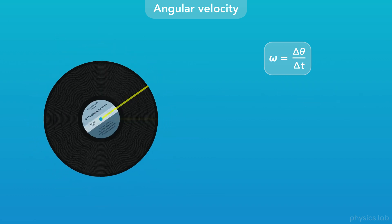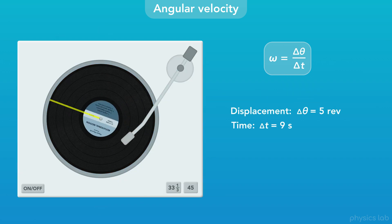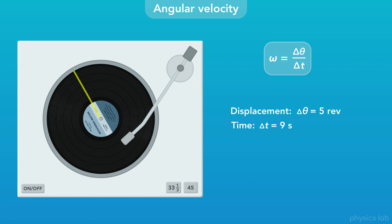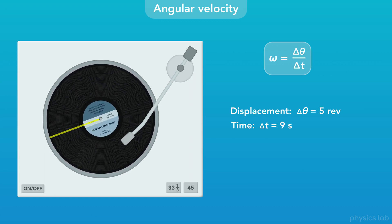Here's one more example. Let's say we're listening to this record and we want to measure its angular velocity. If we watch the line on the record and observe that it rotates 5 revolutions in 9 seconds,